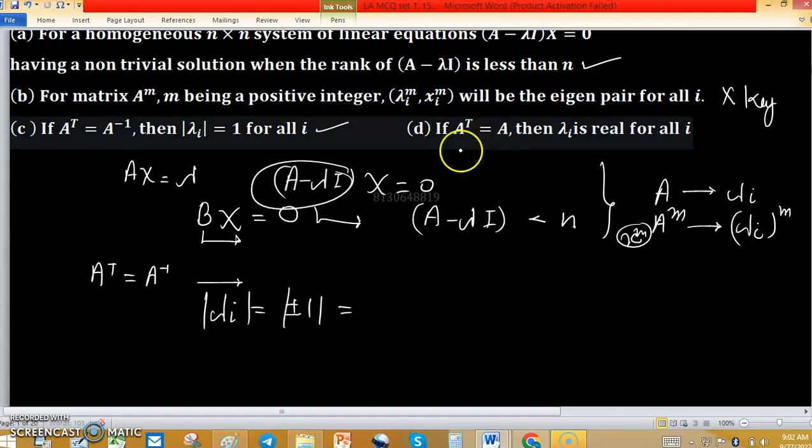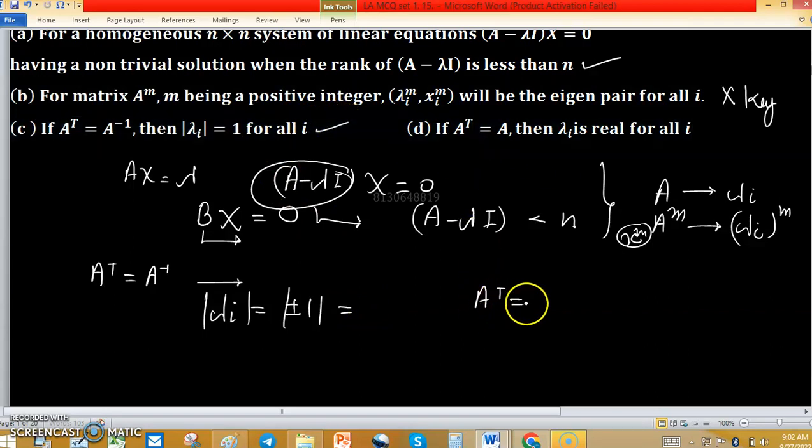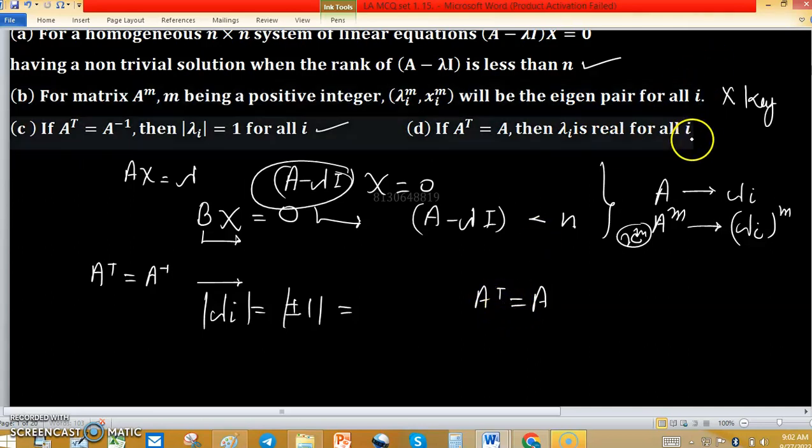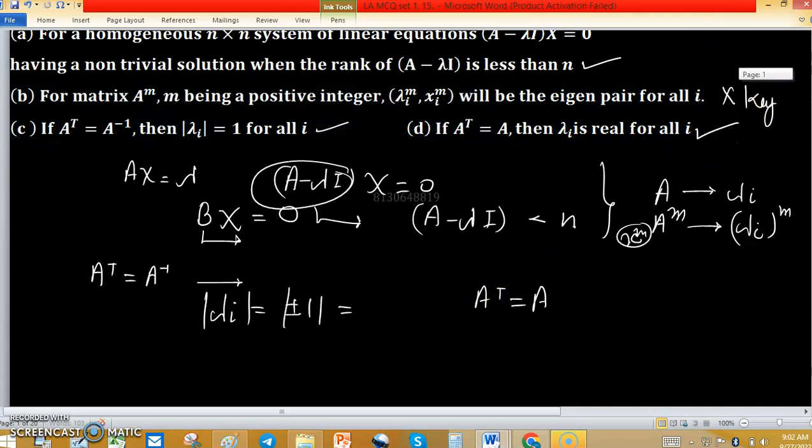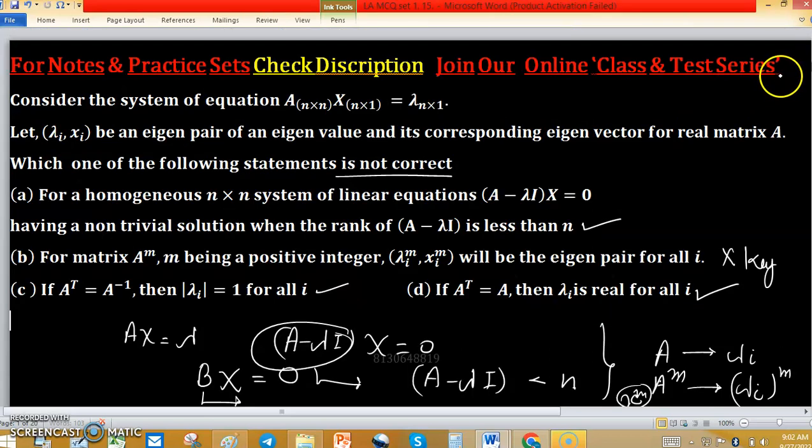Option C is correct statement. And A transpose equals to A in option D. If this condition is given, then matrix is symmetric and we all know symmetric matrices are Hermitian matrices and eigenvalues of Hermitian matrix is real. So option D is also true. So not true means false statement is B, option B.